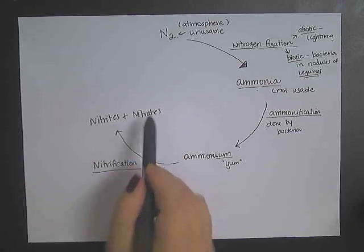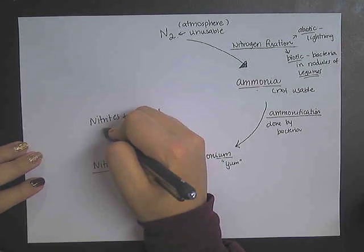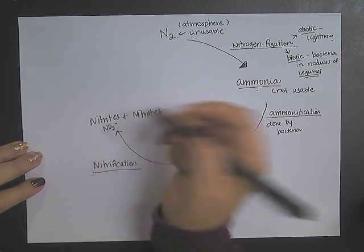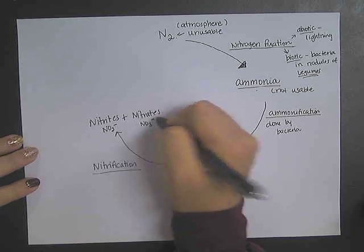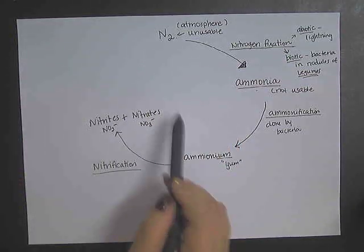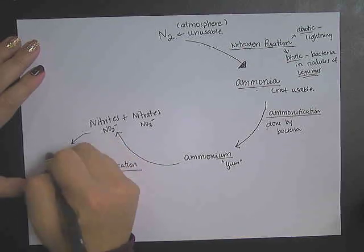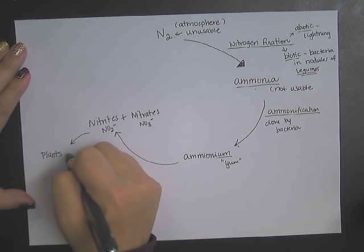Now this right here is water soluble. Your nitrites are NO2 minus, so the minus means it's got a charge, it can dissolve in water, or NO3, also charged, which means it's soluble in water. But this is the form that is going to get used by plants the most. It's going to get absorbed by plants who absorb it through their roots.